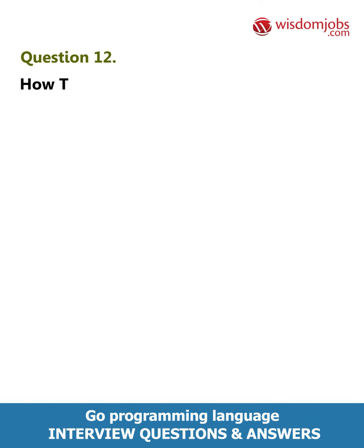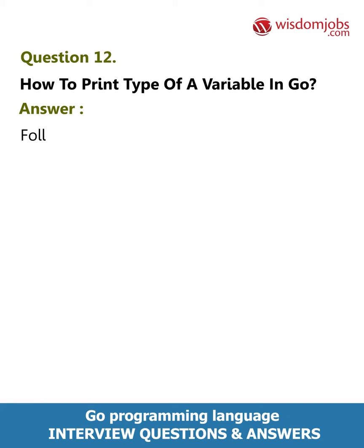Question 12: How to print the type of a variable in Go? Answer: The following code prints the type of a variable.